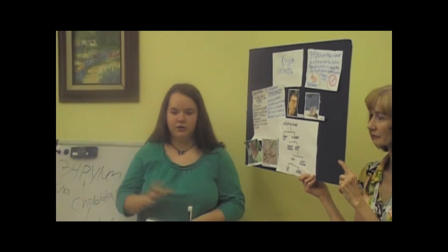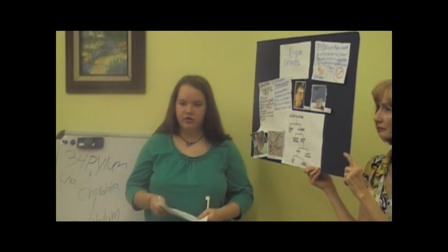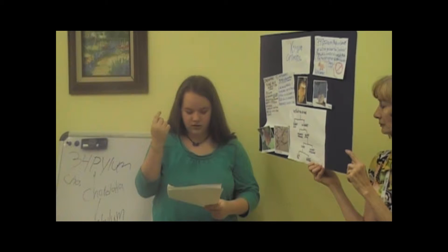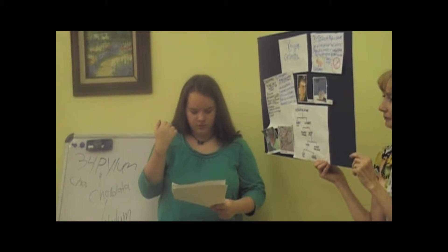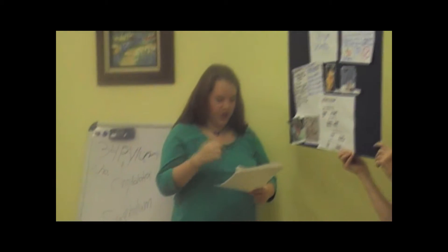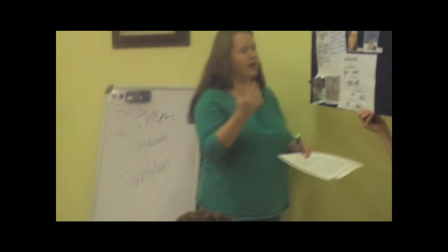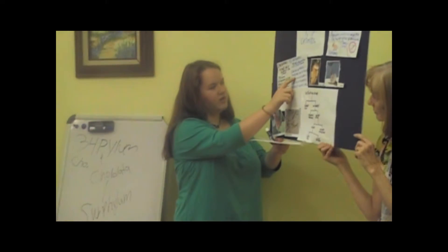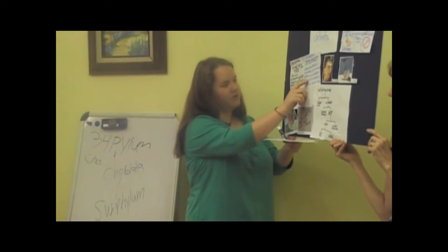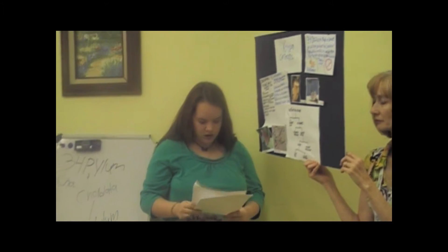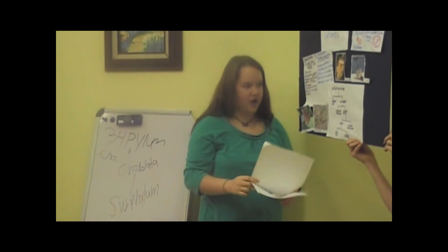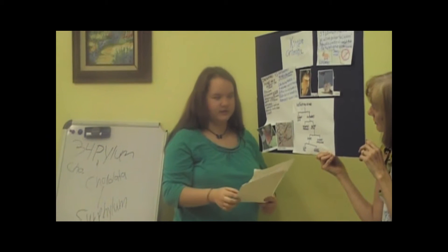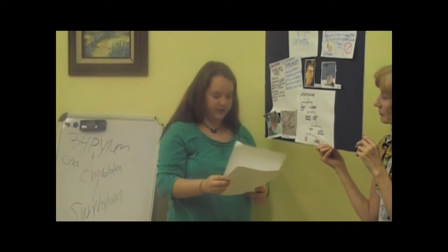Vertebrates have a brain divided into three parts: the forebrain, midbrain, and hindbrain. Vertebrates include fish, amphibians, reptiles, birds, and mammals — five different subclasses of the subphylum.